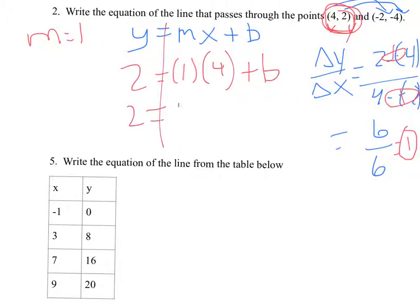2 equals 4 times 1 is 4 plus b. We get b all by itself here because that's what we're looking for. 2 minus 4 is negative 2 equals b. We just found out that b is negative 2.